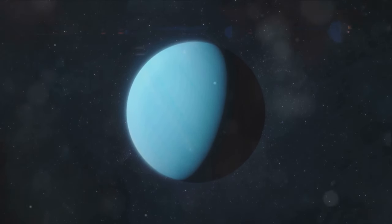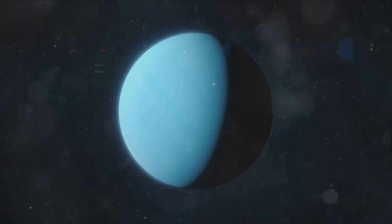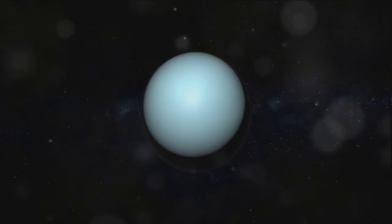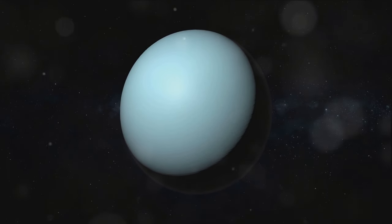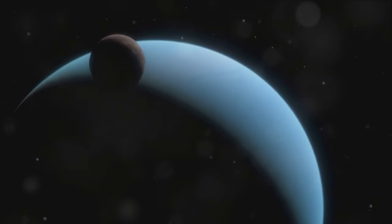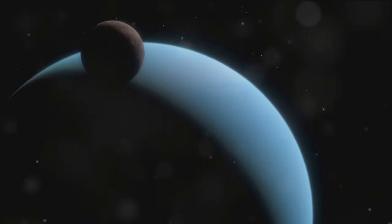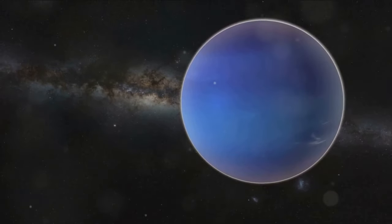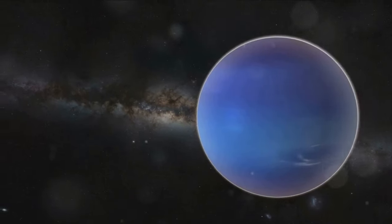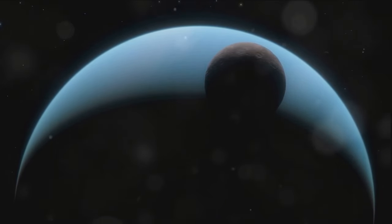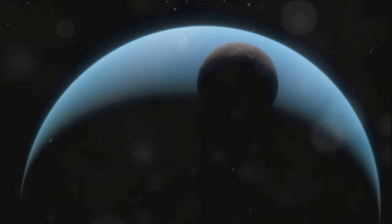Uranus is also home to a complex system of rings and numerous moons. Each of its moons, named after characters from the works of William Shakespeare and Alexander Pope, tells a story of its own. This mysterious giant in our solar system, with its unique characteristics and enigmatic aura, continues to captivate and mystify us. It compels us to delve deeper into the cosmos, to seek answers to questions that have puzzled us for centuries.